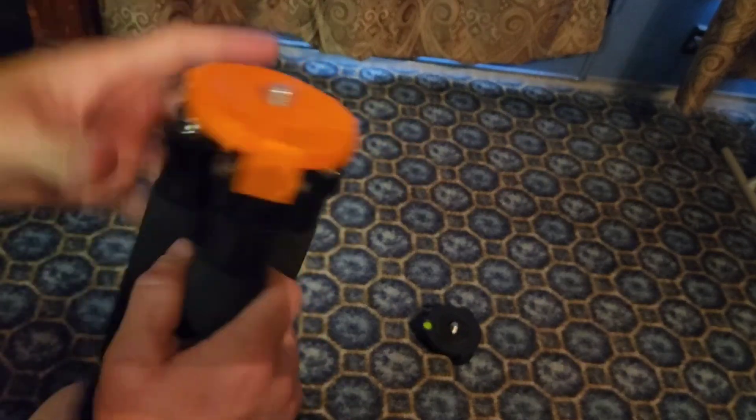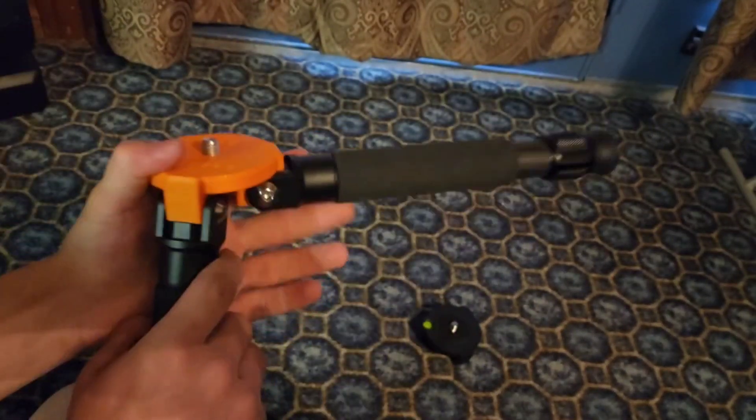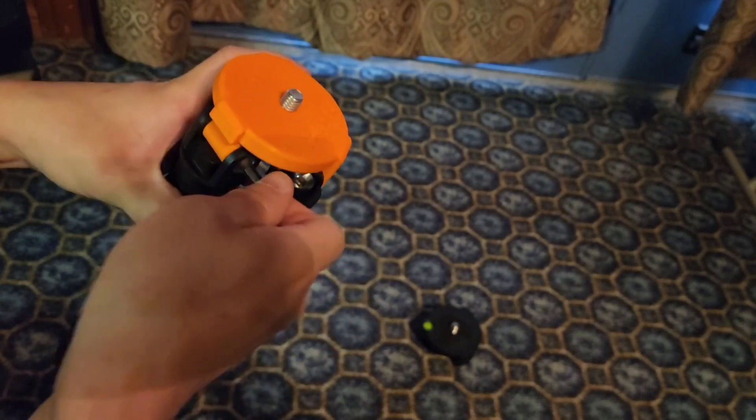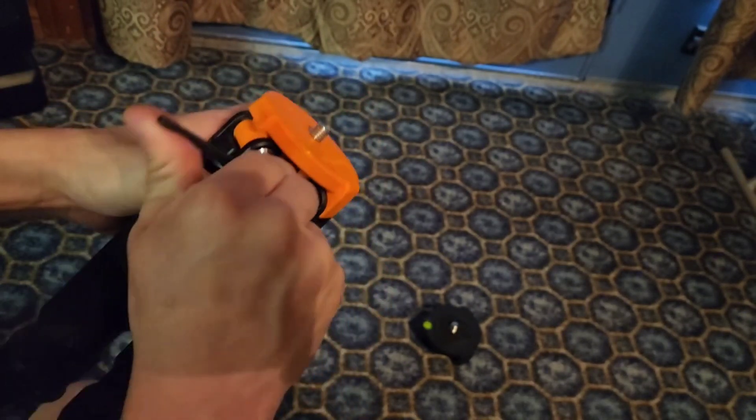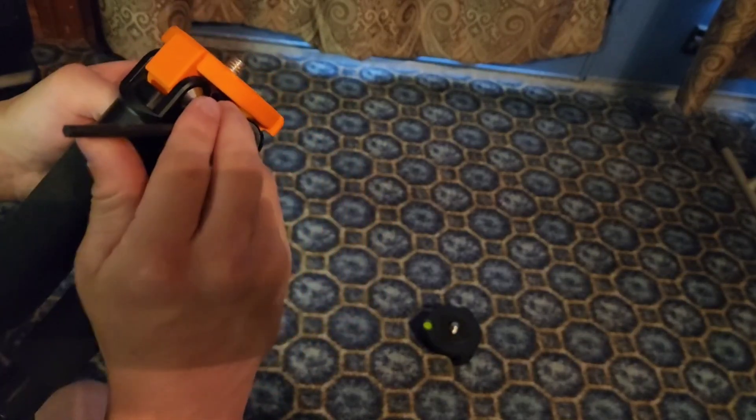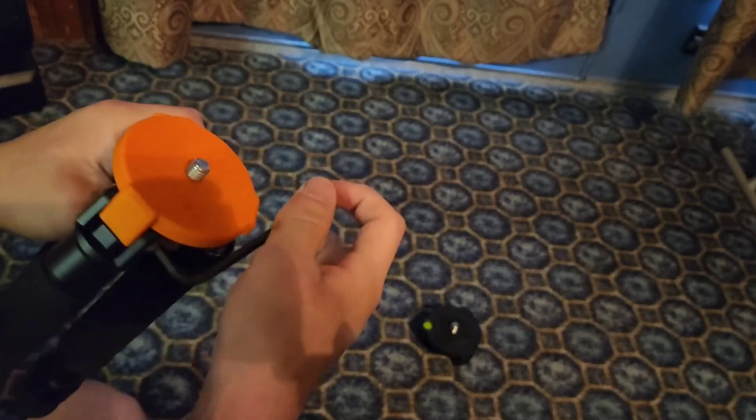Now extremely firmly tighten the three bolts. The tighter they are, the less loose the legs will be. If these aren't tightened enough, the mount will slowly drift throughout the night and ruin your alignment. This step is extremely important. You might even want to use power tools for this.